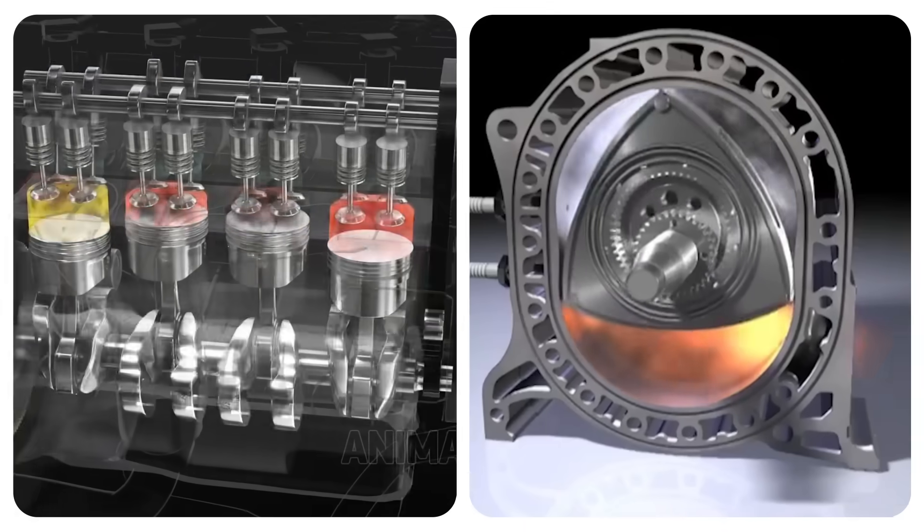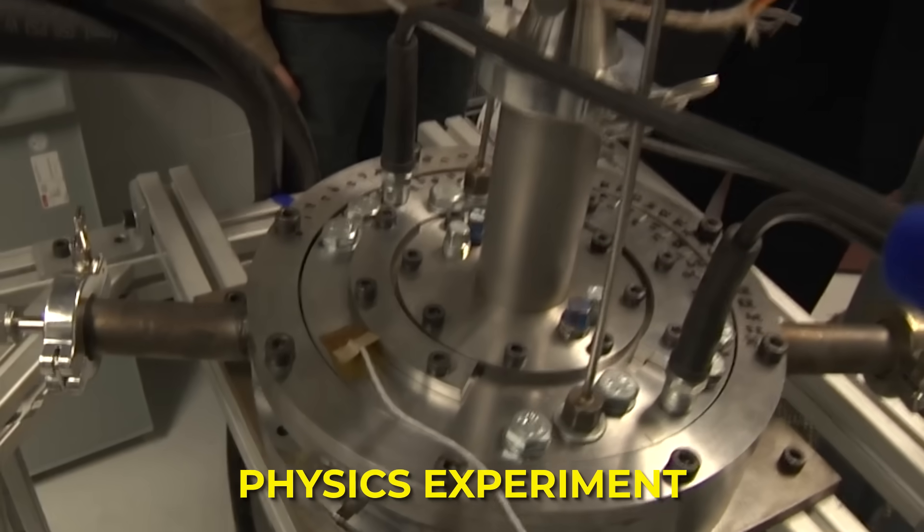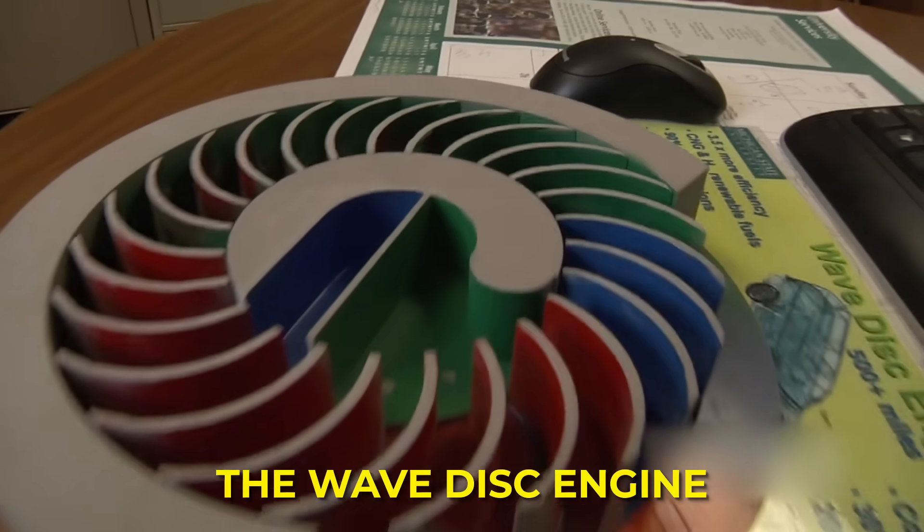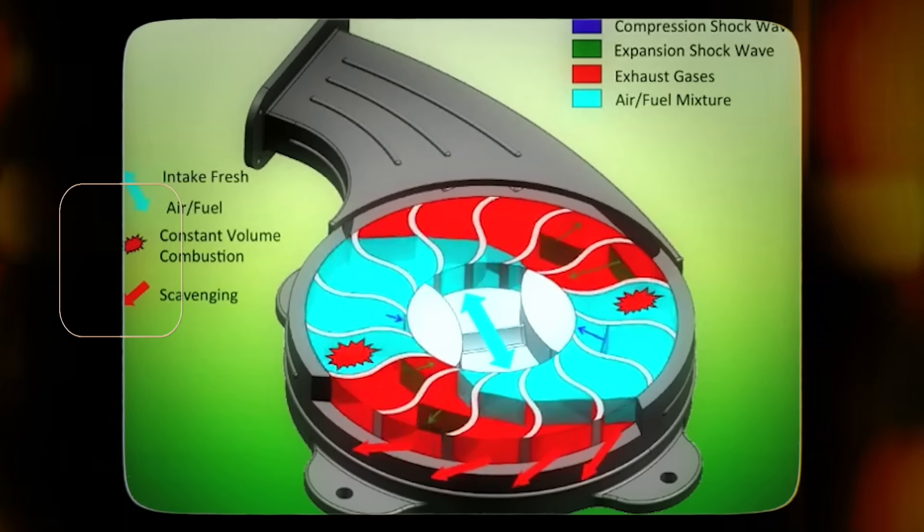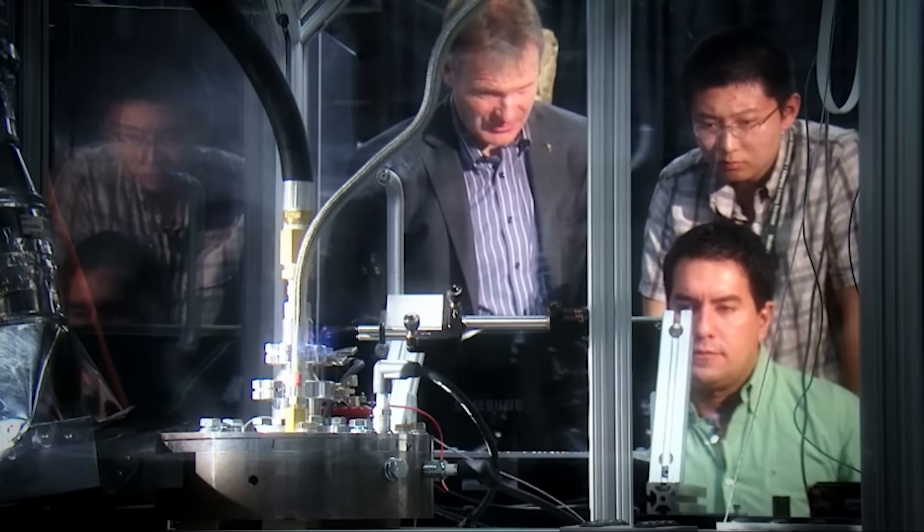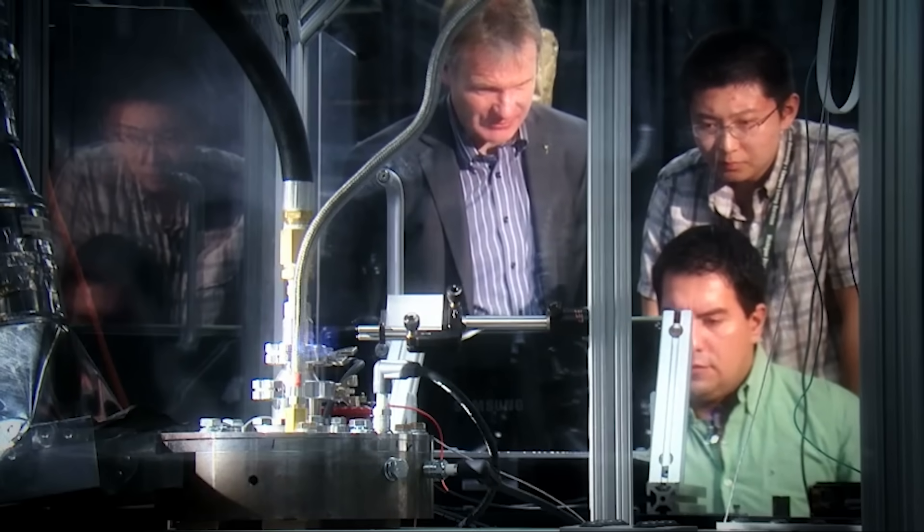It throws away pistons, throws away rotors, and replaces them with something that sounds more like a physics experiment than a working machine. This is the wave disc engine, a device that uses shock waves spinning inside a disc to compress and burn fuel. It feels like something drawn on the corner of a chalkboard by a tired professor, yet it was built, tested, and proven to work.